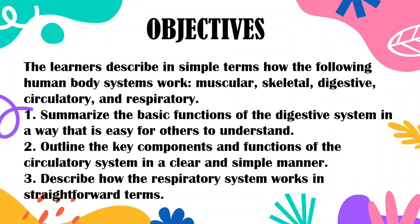Day 3. Objectives: The learner described in simple terms how the following human body systems work — muscular, skeletal, digestive, circulatory, and respiratory. Summarize the basic functions of the digestive system in a way that is easy for others to understand. Outline the key components and functions of the circulatory system in a clear and simple manner. Describe how the respiratory system works in straightforward terms.